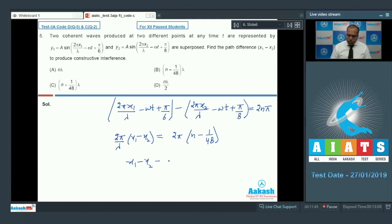So if I solve this, then the value of X1 minus X2 comes out to be λ times N minus 1 by 48. So option B is the correct answer.